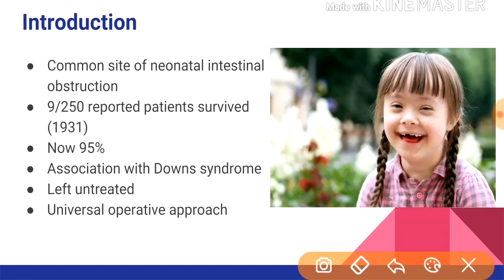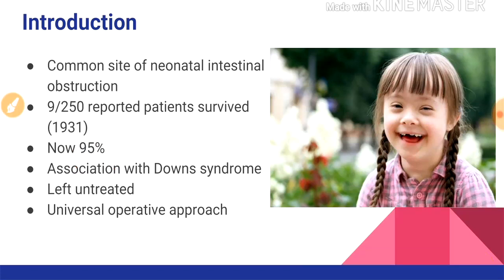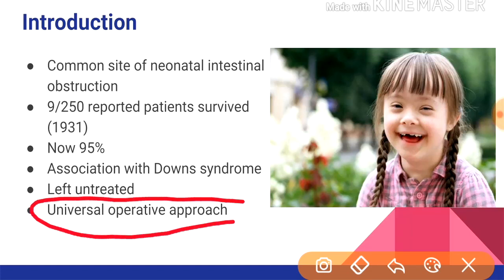Times have changed. Now the survival rate has come up to 95%. Duodenal atresia has an association with Down syndrome. In the earlier period, when the patient had Down syndrome, the patient was left untreated in case of duodenal atresia and the child was left to die. But as time progressed, medical ethics has progressed, and a universal operative approach is the norm today.